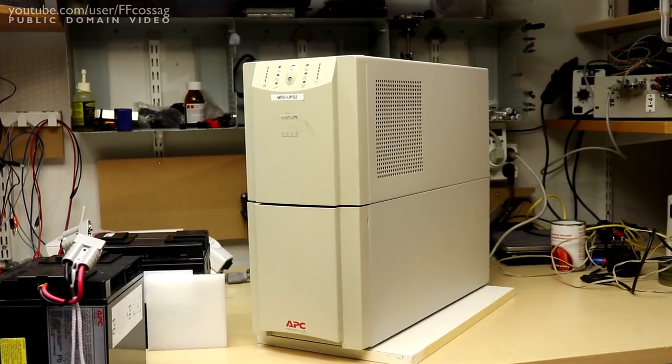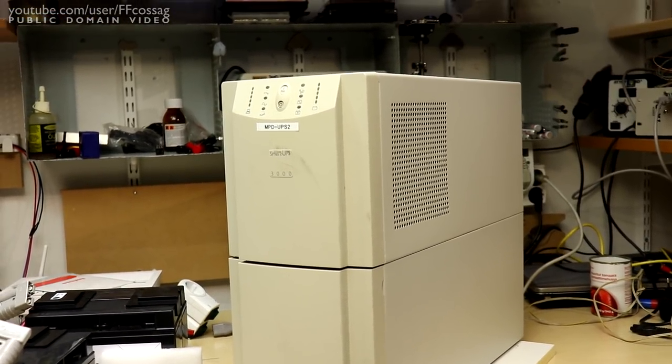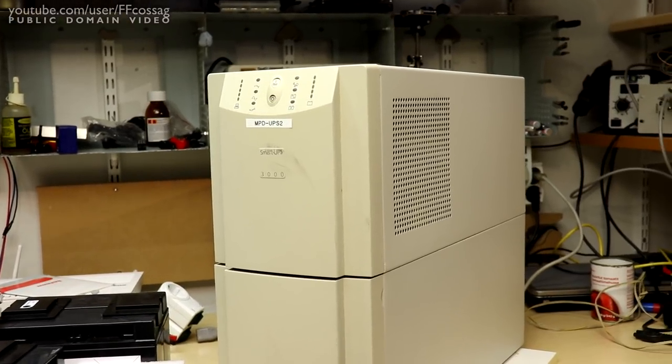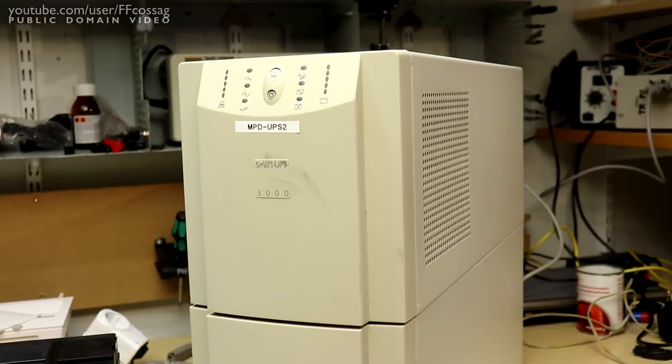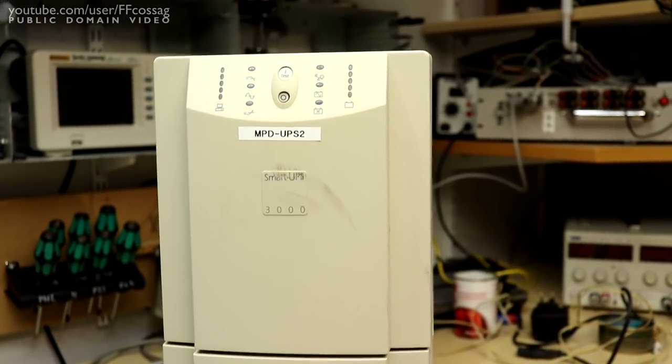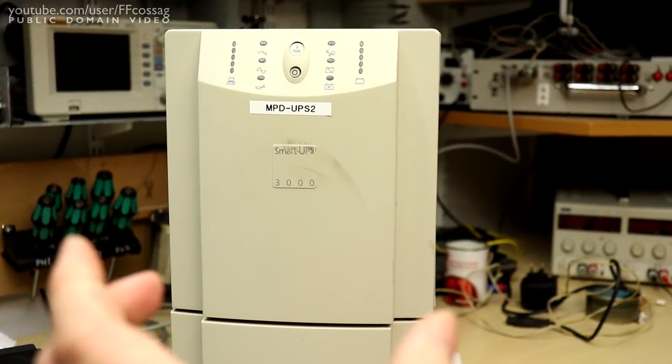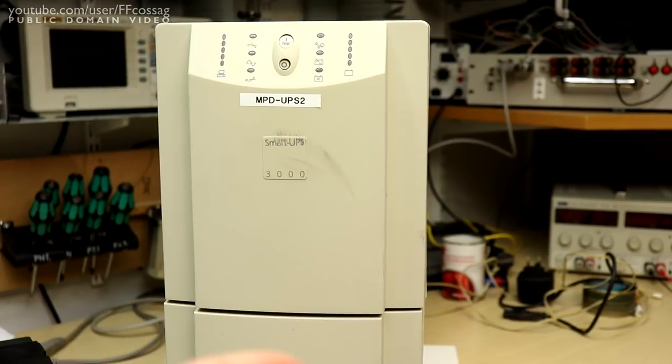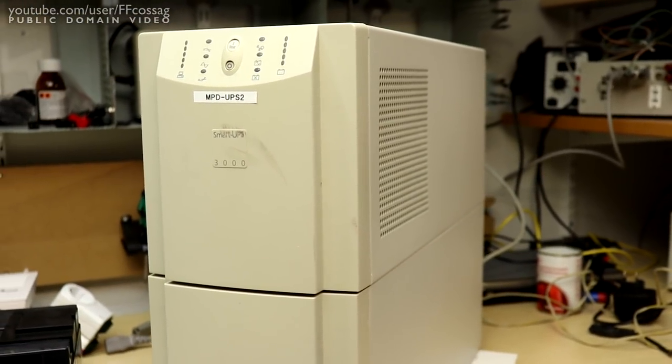So the 3000VA of these white ones is a bit beefier than the rest. For instance, all the smaller models are narrower. The two top models, I believe the 2200VA and the 3000VA share the chassis, which is about two centimeters wider than the normal smaller APC Smart UPS chassis you're used to seeing.